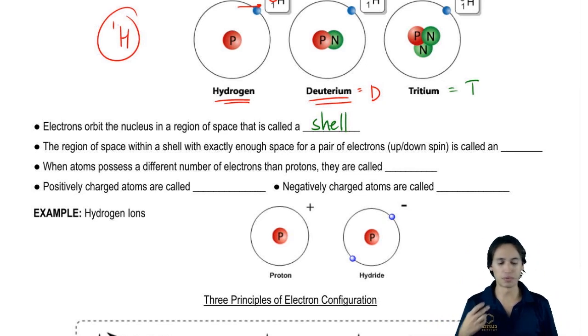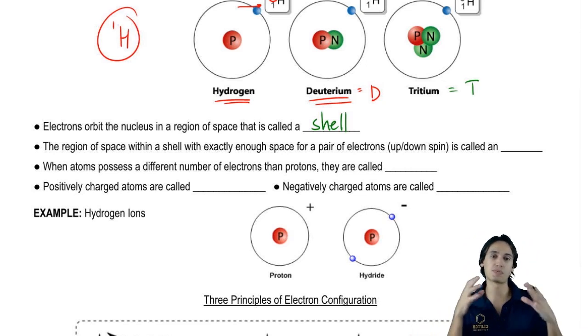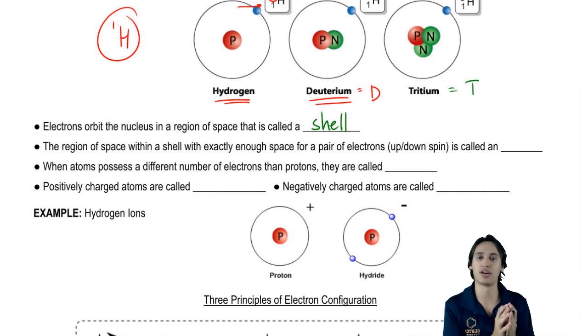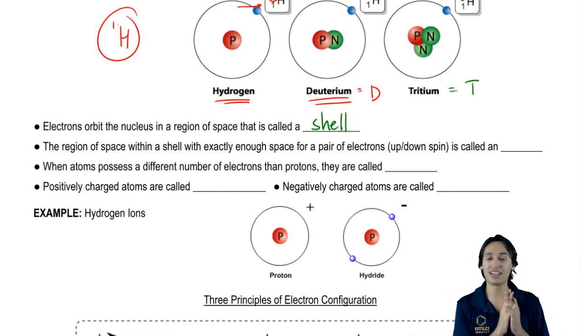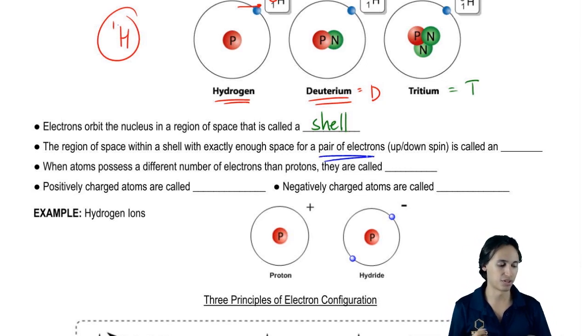Now shells, remember shells can hold a lot of electrons. Some shells can hold up to 18 electrons, something like that. But there's a smaller subset of space within a shell that has enough room for exactly one pair of electrons. Do you guys remember what that is called? That would be called an orbital.